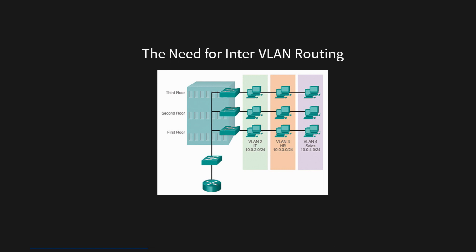Consider a scenario with multiple VLANs in your network, such as VLAN 2 (IT), VLAN 3 (HR), and VLAN 4 (Sales). In this setup, each VLAN represents a different department or group of users. Without inter-VLAN routing, devices in VLAN 2 cannot communicate with devices in VLAN 3 or VLAN 4, and vice versa. This lack of communication between VLANs would be impractical and inefficient for most real-world network deployments. Inter-VLAN routing provides a solution to this limitation, enabling communication between different VLANs.